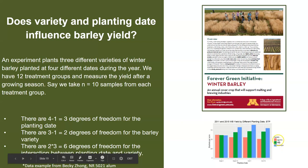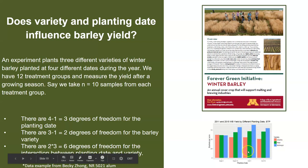We have three different varieties shown in the graph. It looks like the highest yield was at a planting date of October 1st for the McGregor variety, whereas the lowest yield was around October 15th for the Charles variety. This is some interesting data to illustrate the idea of a two-way analysis of variance.